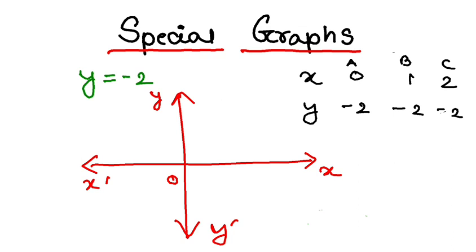And if I plot the points, so I have 0, minus 2, so this is my a. I have 1, minus 2, so this is my b. And I have 2, minus 2, this is my c.